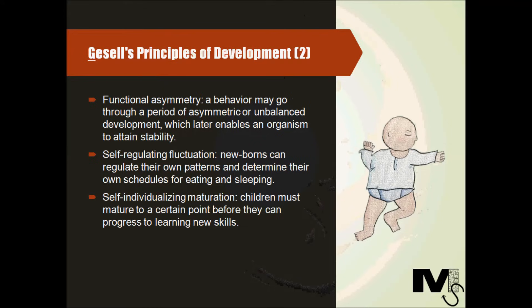The next principle is functional asymmetry. Sometimes a behaviour may go through a period of asymmetric or unbalanced development which later enables an organism to attain stability. In motor terms this essentially implies an asymmetric posture which the body gets accustomed to, to later figure out that it needs to be corrected. Infants can often demonstrate a tonic neck reflex wherein they turn their head in one direction when sleeping and have the same side arm extended while the other arm rests behind their back. This is an asymmetric position and it can often get corrected with the passage of time.